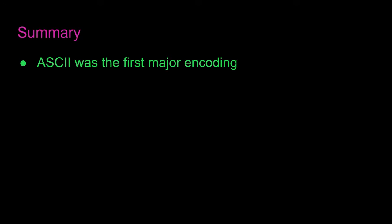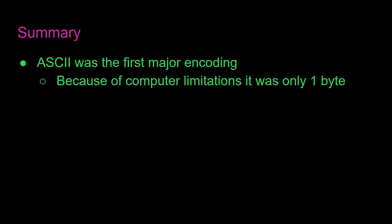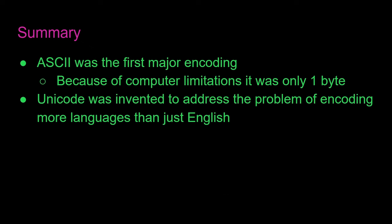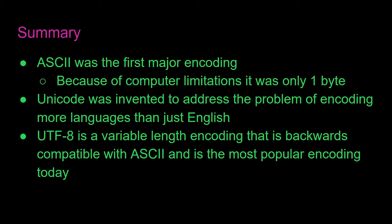Here's a summary: ASCII was the first major encoding. Because of computer limitations, it was only one byte. Unicode was invented to address the problem of encoding more languages than just English. UTF-8 is a variable length encoding that is backwards compatible with ASCII and is the most popular encoding today, and it implements Unicode.